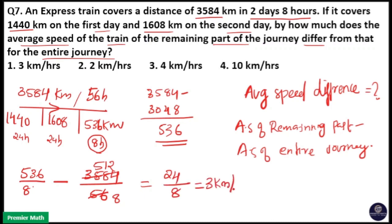So 3 km per hour is the difference in average speed. So option A is your answer.